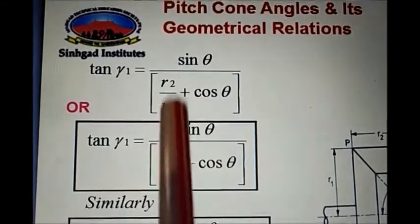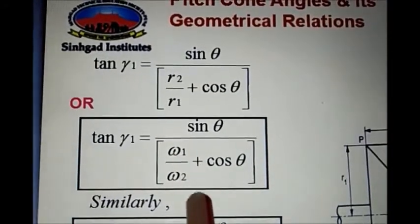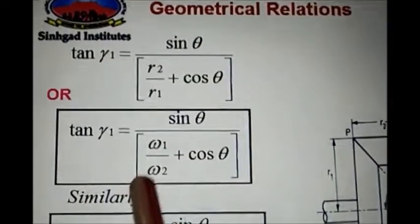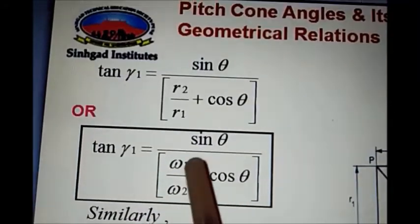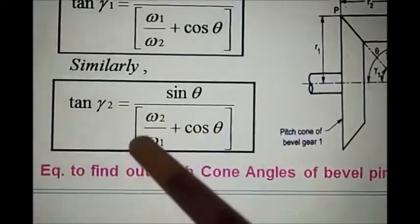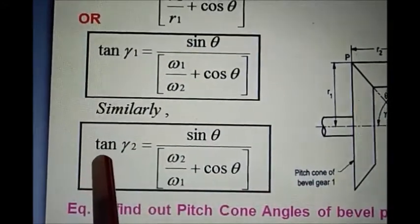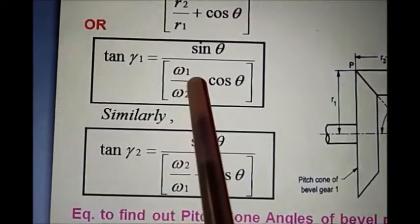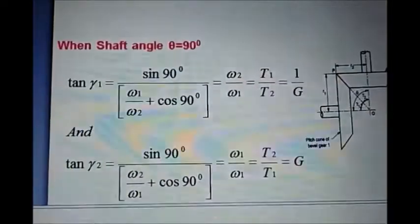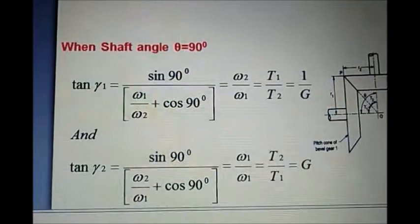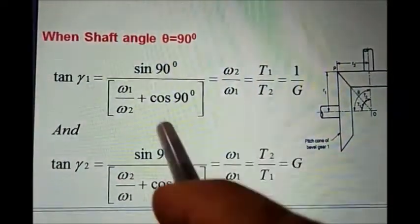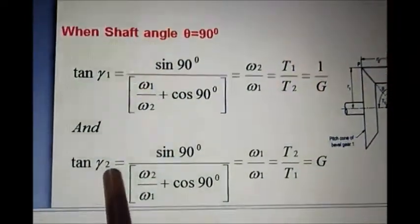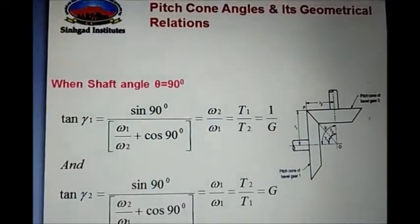Replacing R2 over R1 with omega 1 over omega 2 (since radius is inversely proportional to angular velocity), or equivalently N1 over N2 in terms of RPM: tan(gamma 1) equals sine theta over (omega 1 over omega 2 plus cos theta). Similarly, tan(gamma 2) equals sine theta over (omega 2 over omega 1 plus cos theta). When the shaft angle is 90°, sine 90° equals 1 and cos 90° equals 0, so tan(gamma 1) equals 1 over G, and tan(gamma 2) equals G.